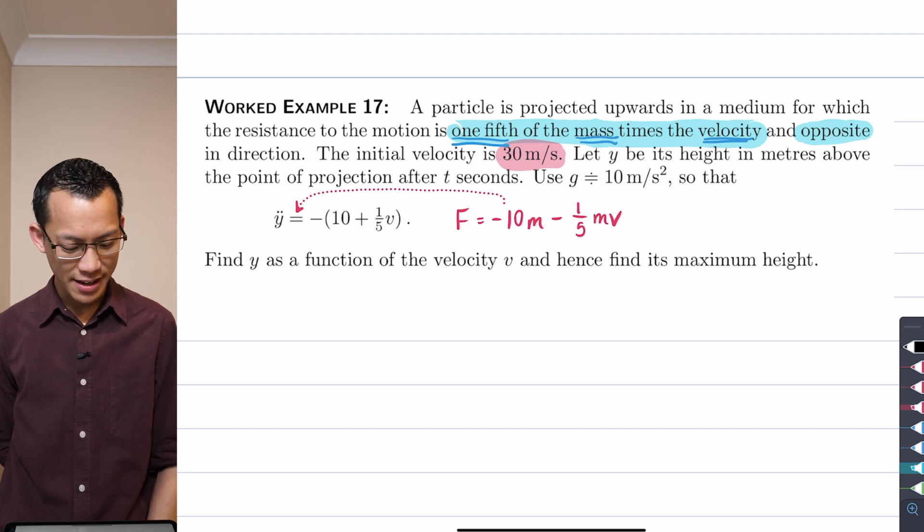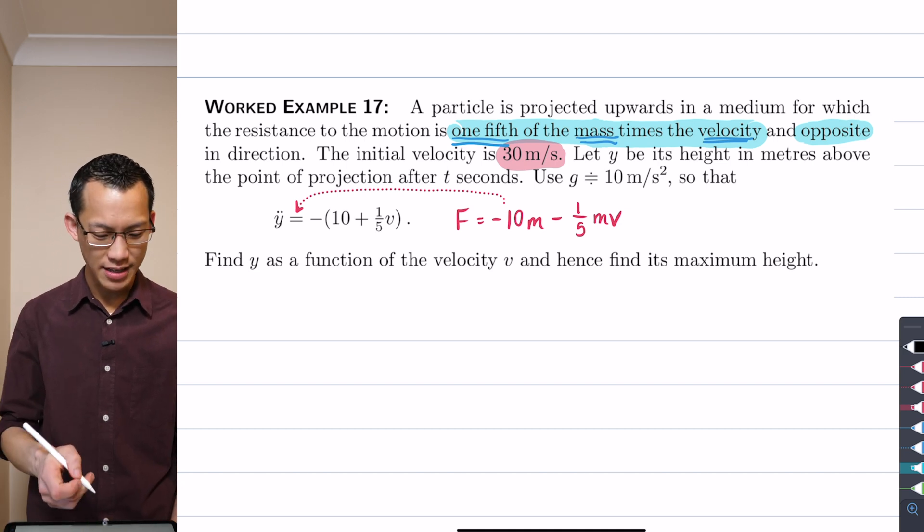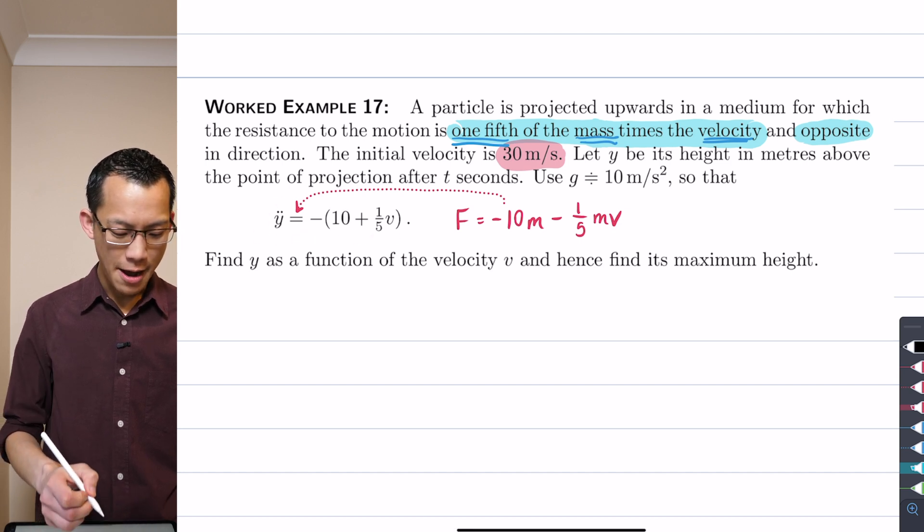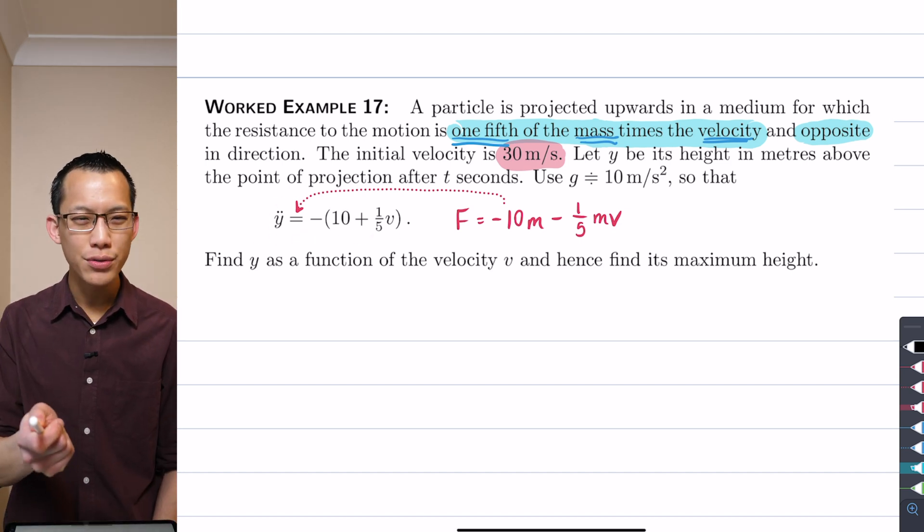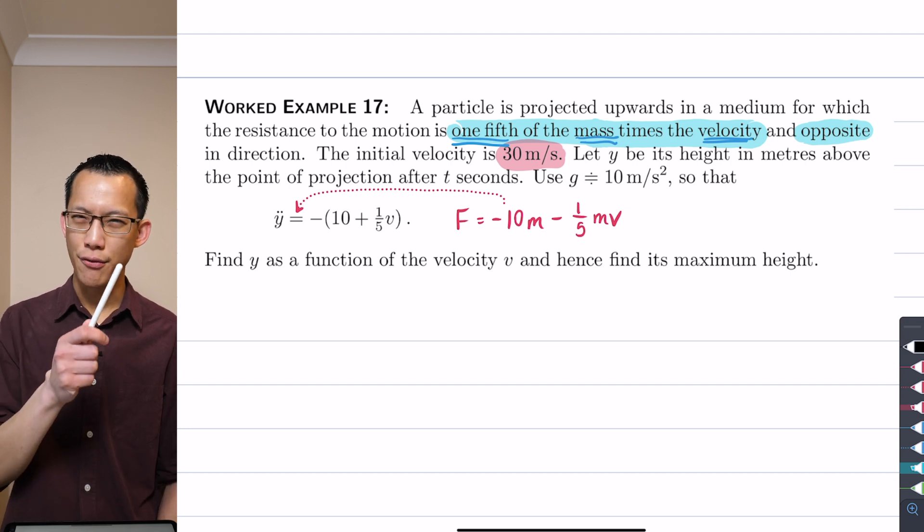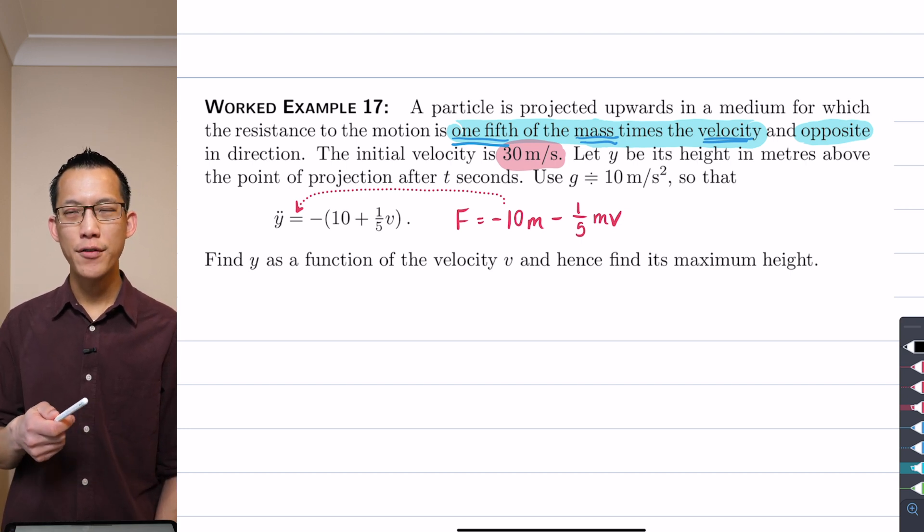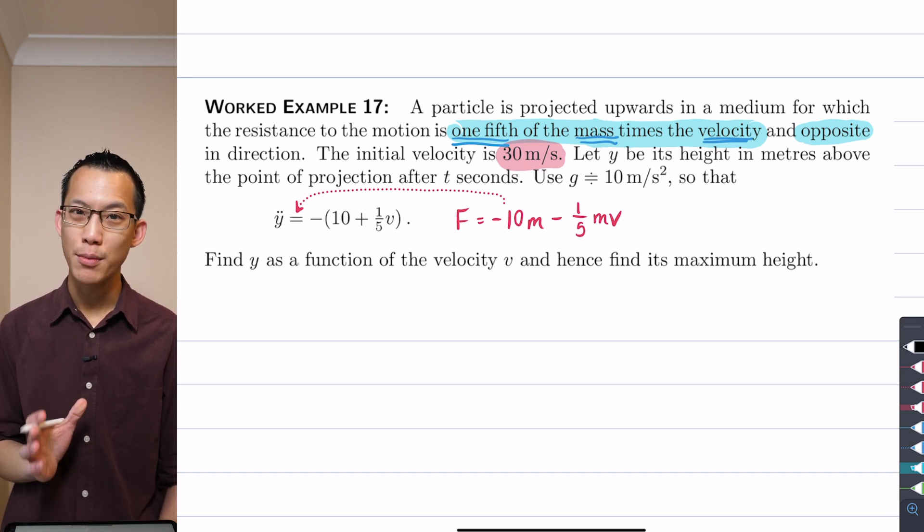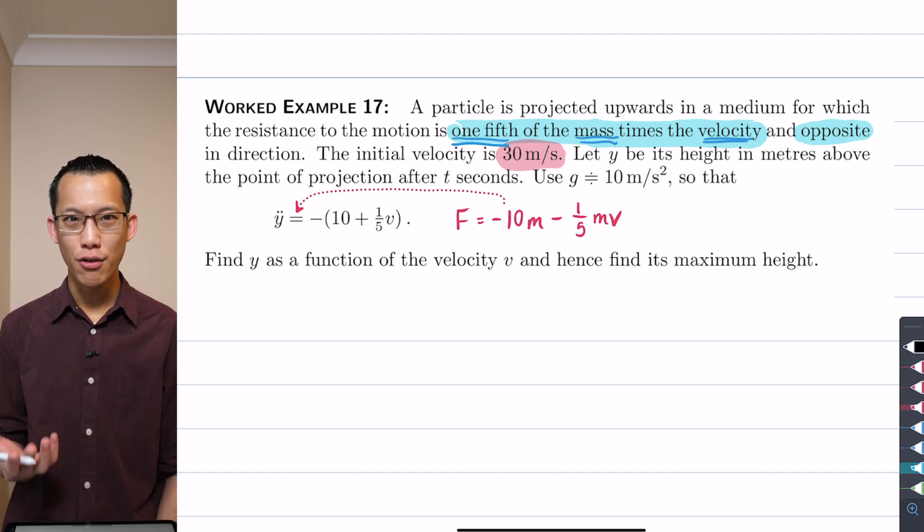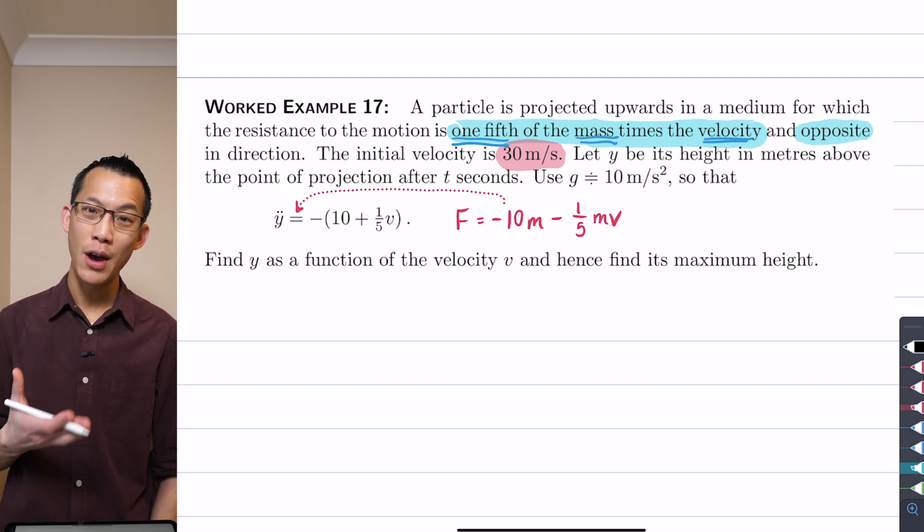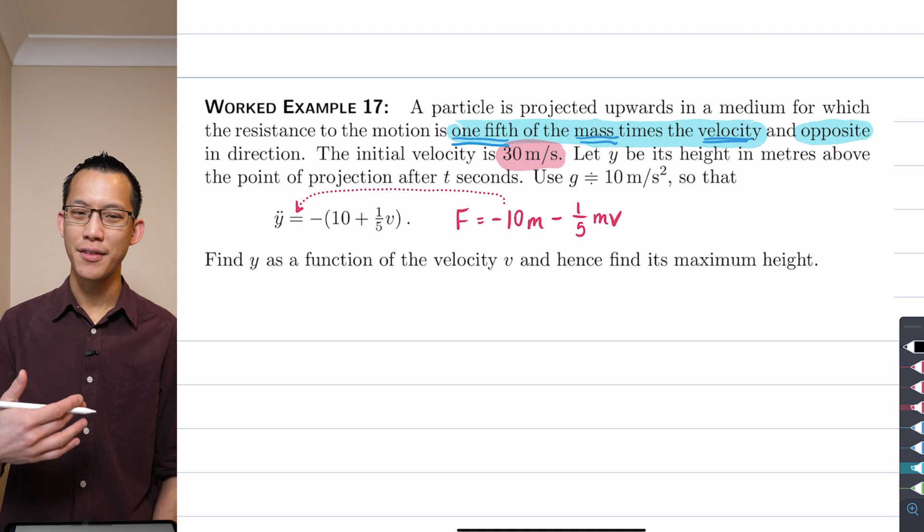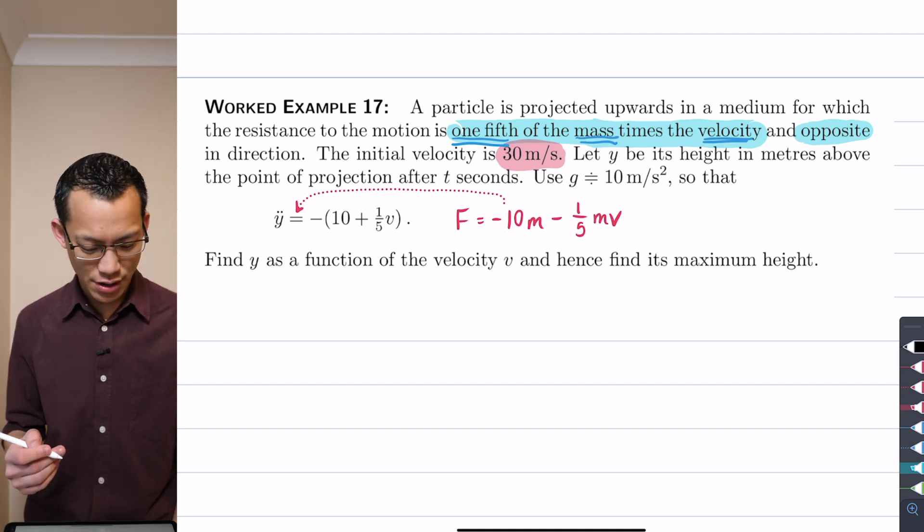Okay, so how are we going to begin? Well I'm going to start with this acceleration equation, y double dot equals this, but I noticed that where I'm trying to go to is y as a function of v, right? So if I've got acceleration here, I'm going to need to do some kind of integration. So as we've seen before, I need to choose a form for acceleration that's going to be most helpful to get me towards y as a function of v.